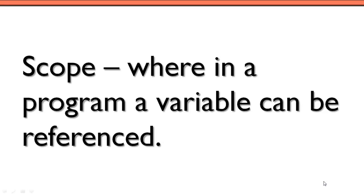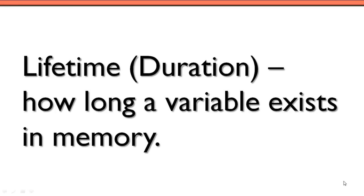The scope of a variable is simply where in a program a particular variable can be referenced or accessed. Another term we often talk about is its lifetime or duration — simply how long it exists or persists in memory.